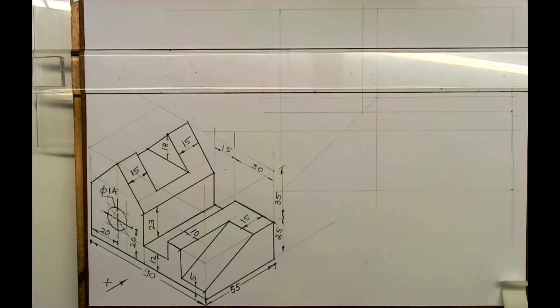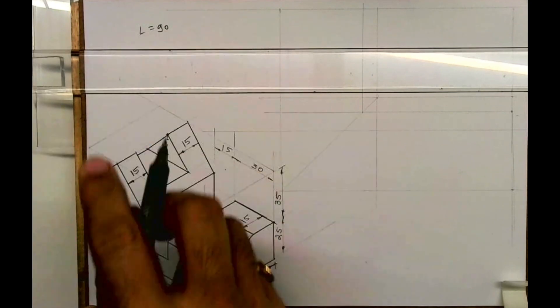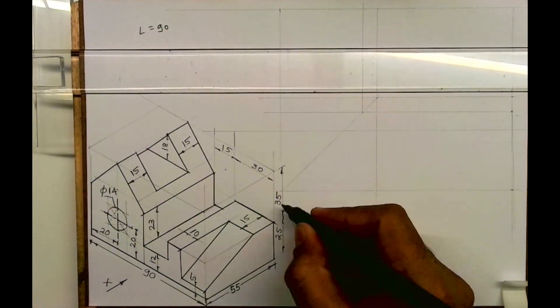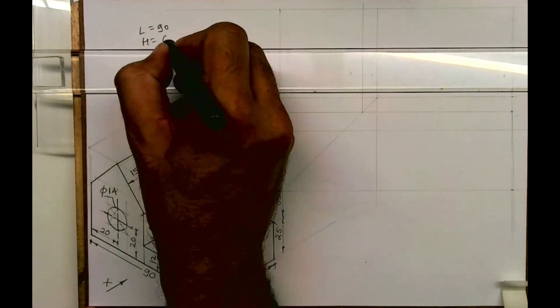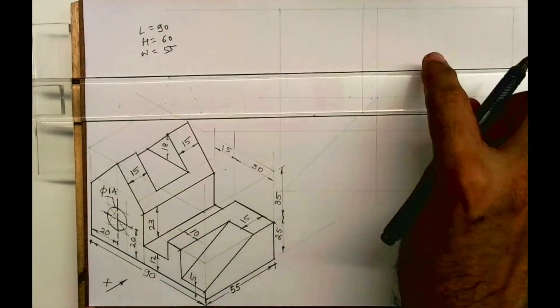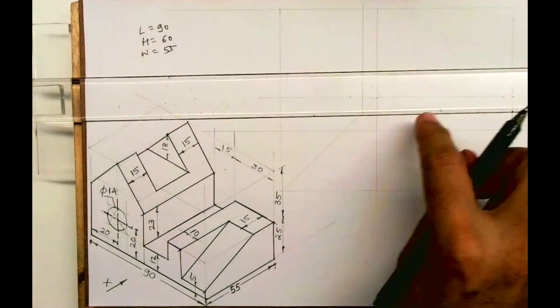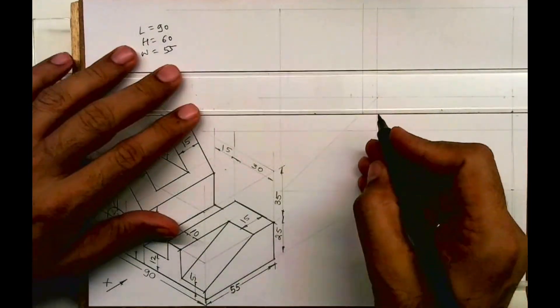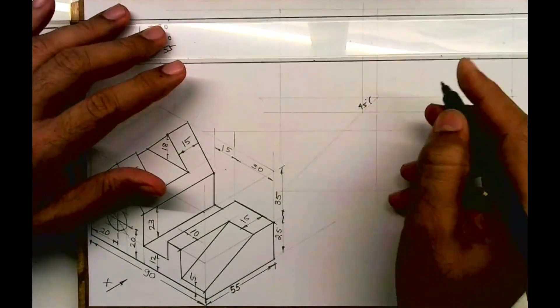Welcome to technical drawing. Today we'll see Amin orthography. First, we'll see length, width and height: length is 90, height is 25 plus 35 equals 60, and width is 55. First we will draw the layout: front view, top view, and right-hand side view. This is 45 degree projection.